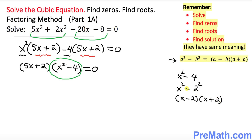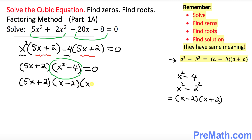That means the difference of two squares is always equal to the difference and the sum. So I can write the full factored form as: 5x plus 2, times x minus 2, times x plus 2, equals 0.